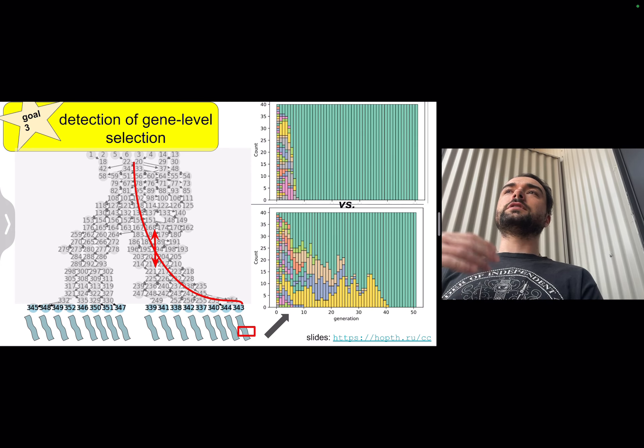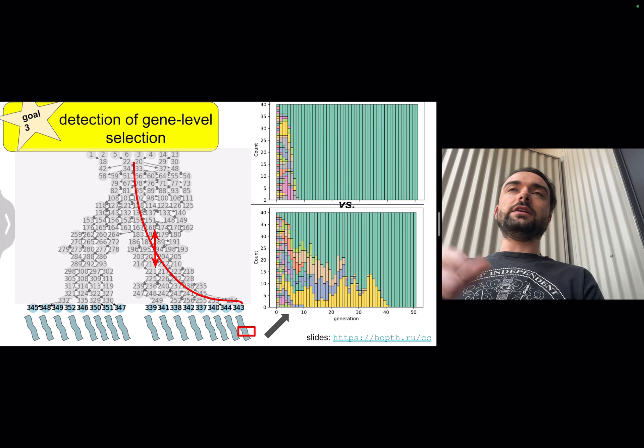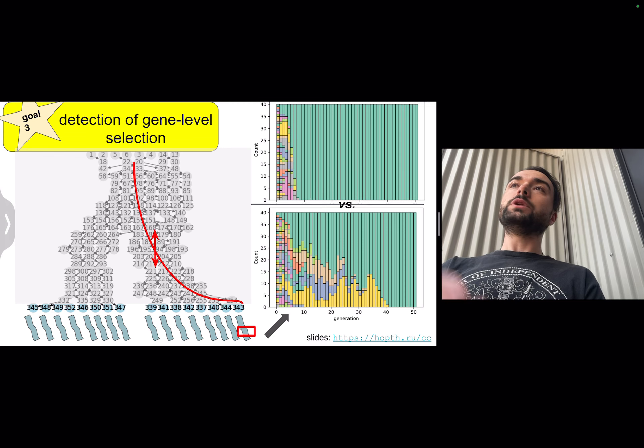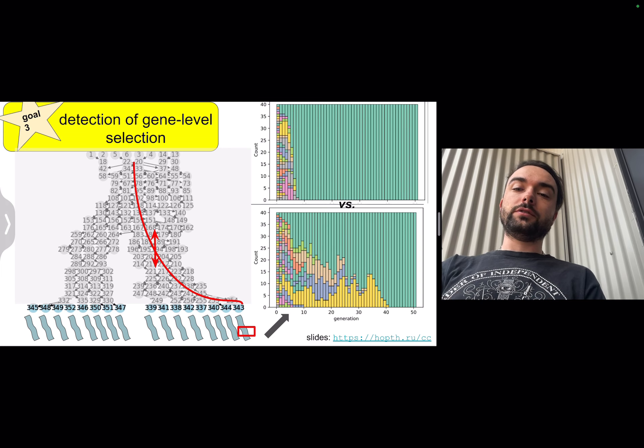In order to differentiate that from selection events where, due to fitness advantage, a gene increases in its copy count very quickly, as shown on the top here in this Muller plot, we need to measure the rate of the copy count increase.